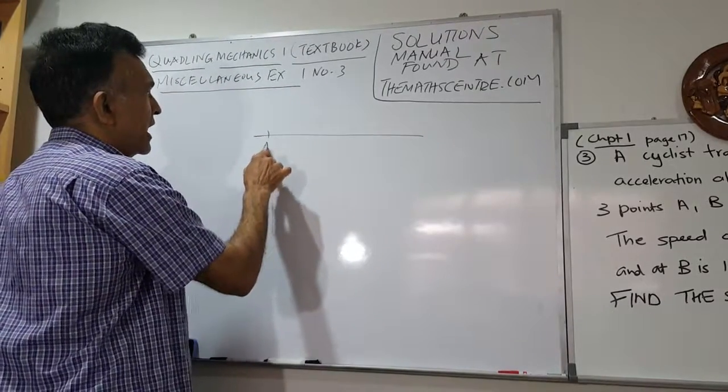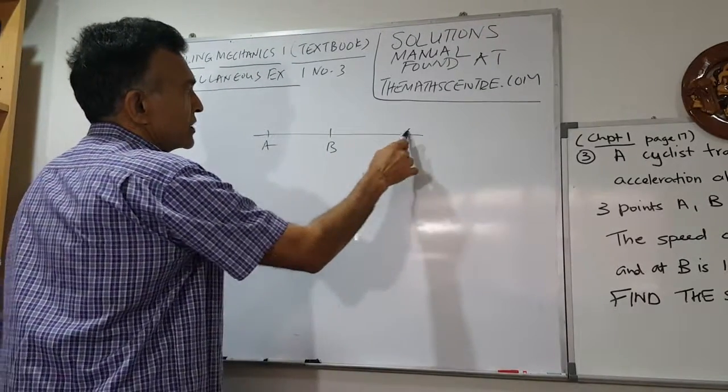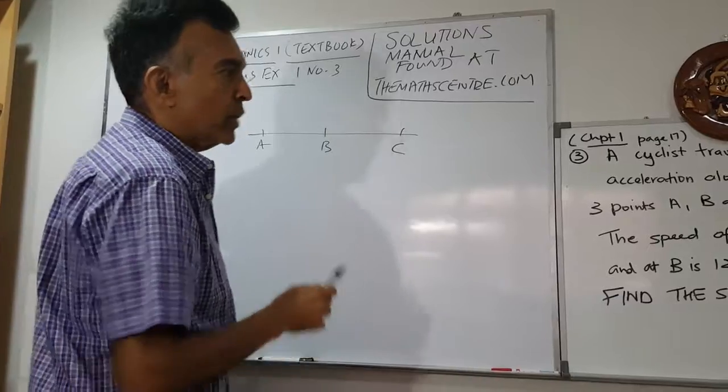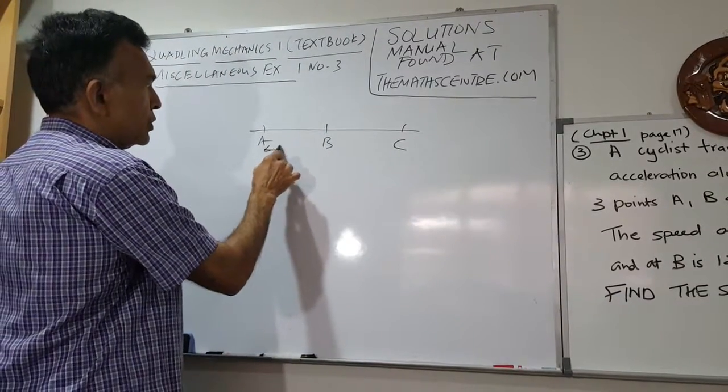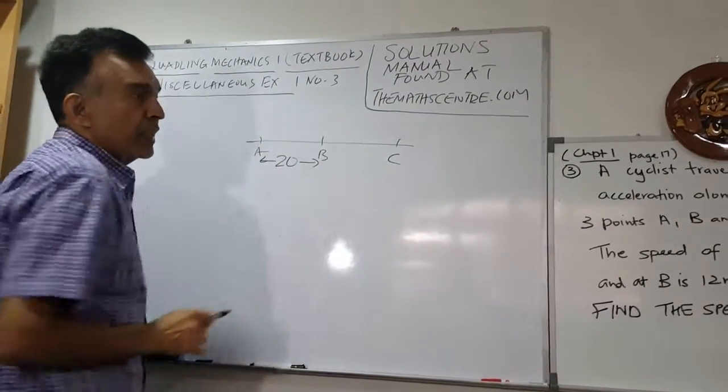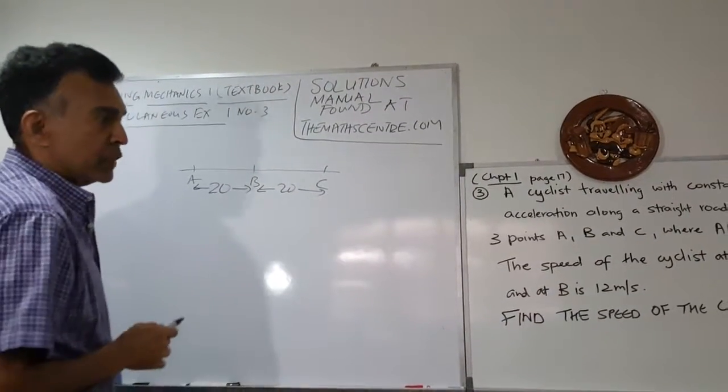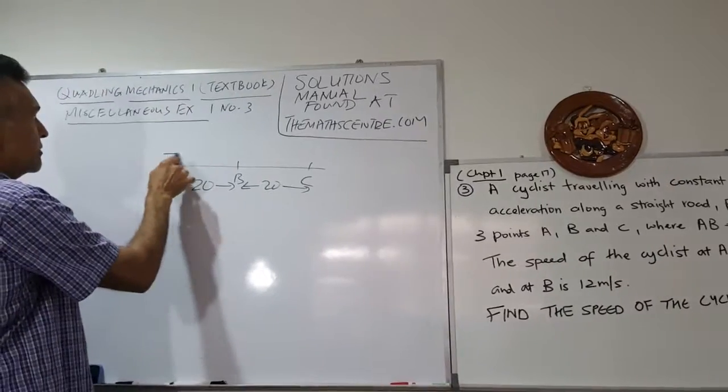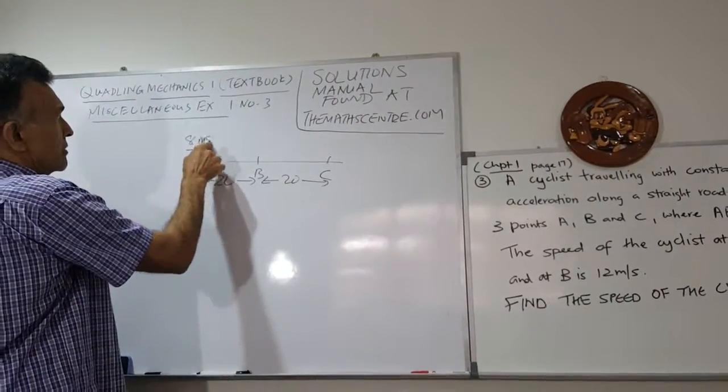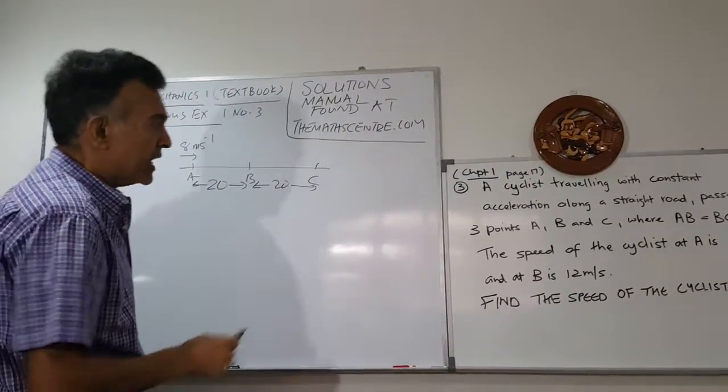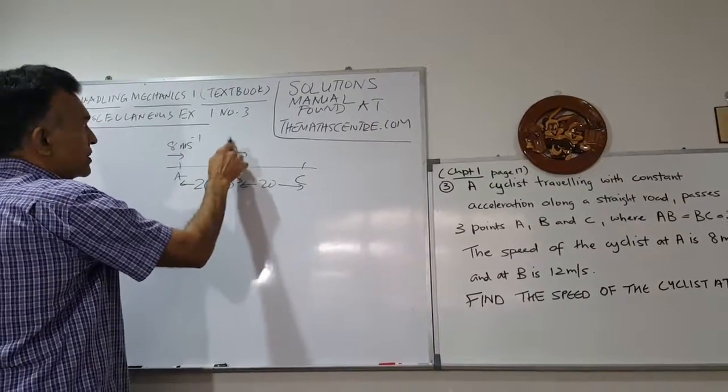We have points A, B, and C. Let's plug that in. We are told AB equals 20 meters and BC is also 20 meters. The speed of the cyclist at A is 8 meters per second and at B it's 12 meters per second.